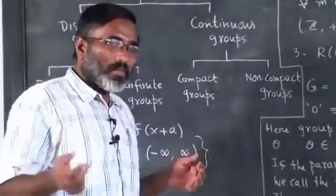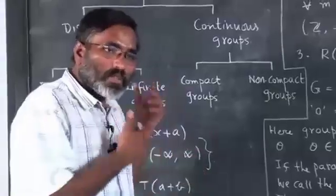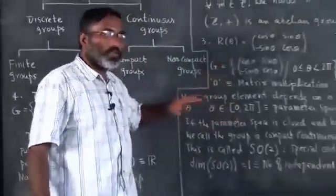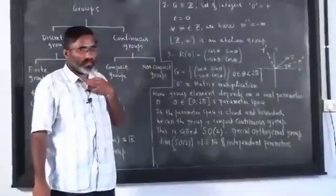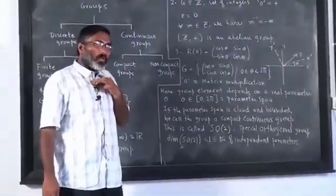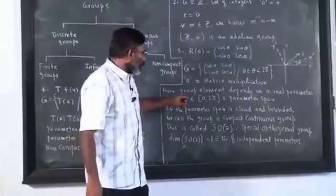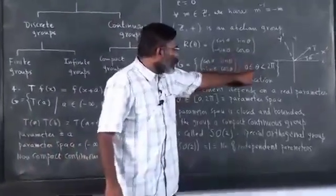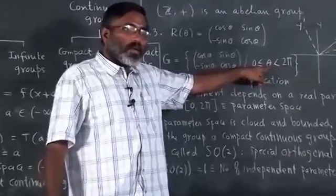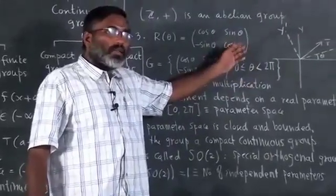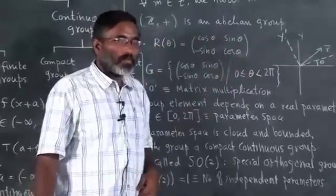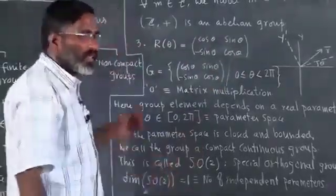Lie group is the general name. All of these are Lie groups — SO(2) is a Lie group, SO(3) is a Lie group. A Lie group is a group which depends on the continuous variation of parameters with certain properties. We will also discuss the general theory of Lie groups.